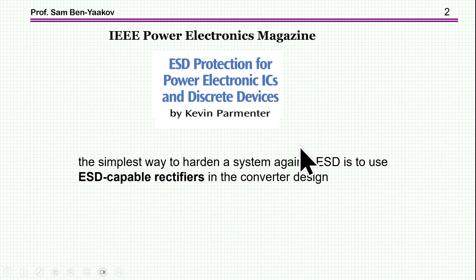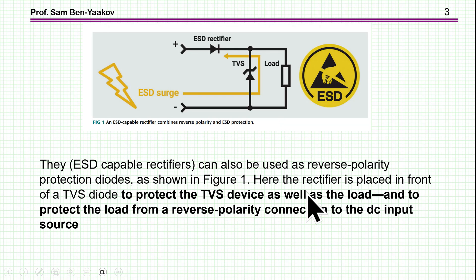Let me start by quoting statements from this article, ESD Protection for Power Electronics ICs and Discrete Devices, published in the IEEE Power Electronics Magazine. One opening statement is that the simplest way to harden a system against ESD is to use ESD-capable rectifiers in the converter design.